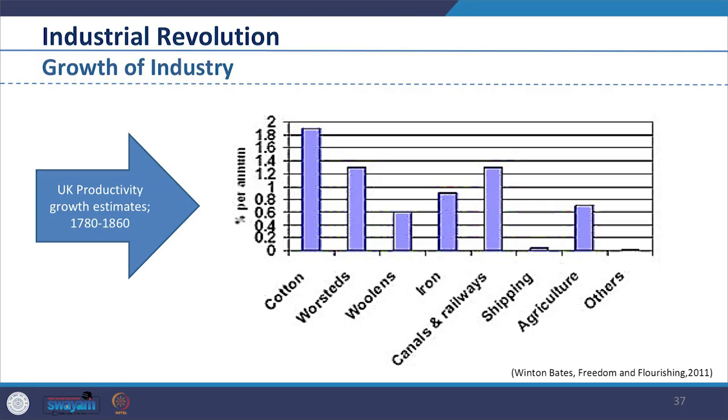As demand for products like cloth increased, newer discoveries were made by inventors with multiple technological improvements to ease production. To house these new machines, manufacturers built the first factories. Slowly these productions became larger in scale, ultimately helping economic growth in sectors like agriculture, shipping, cotton and wool. The graph represents the productivity estimated growth in the UK from 1780 to 1860.